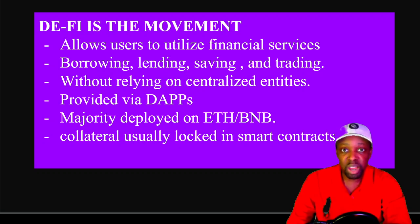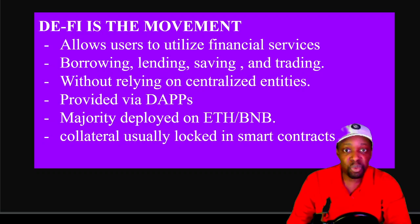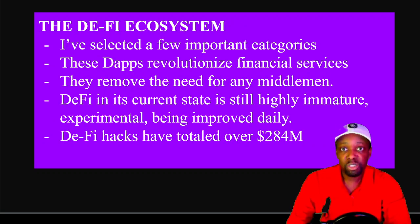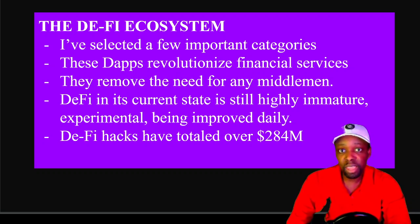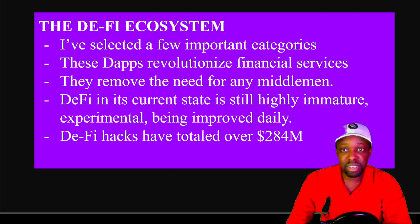There will be others — Polkadot, Kusama, and many more blockchains and parachains. When using DeFi applications, you provide collateral to a platform to access services in smart contracts. The DeFi ecosystem has 10 important categories — all dApps — that revolutionize financial services and remove the need for middlemen. DeFi in its current state is highly immature and experimental, being improved daily, so there is risk. DeFi hacks from 2019 until now have totaled $284 million US.